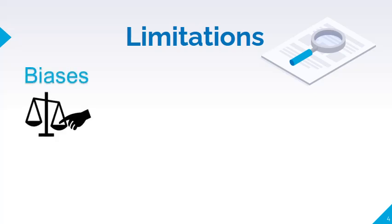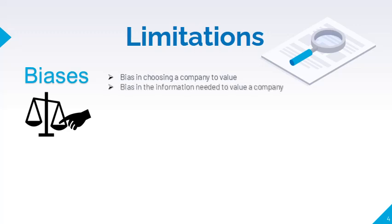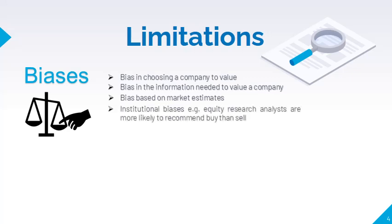Valuation is never 100% accurate due to bias, imprecision, and uncertainty. The entire process of valuation is susceptible to bias. The choice of company to value may be considered biased when it is heavily influenced by perceptions derived from news reports or tips from other investors. The information needed for valuation may also contain bias, such as when a company's financial information and managerial performance are not fairly presented in the financial statements and annual reports. Market price further adds to bias. Analysts may not want to turn in a value that is too far from the market price, as the variance may be due to valuation errors rather than market mistakes.